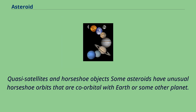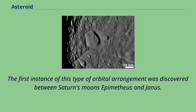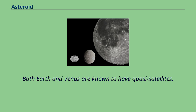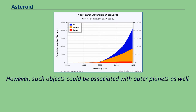Some asteroids have unusual horseshoe orbits that are co-orbital with Earth or some other planet; examples are 3753 Cruithne and 2002 AA29. The first instance of this type of orbital arrangement was discovered between Saturn's moons Epimetheus and Janus. Sometimes these horseshoe objects temporarily become quasi-satellites for a few decades or a few hundred years before returning to their earlier status. Both Earth and Venus are known to have quasi-satellites.